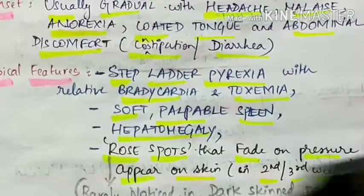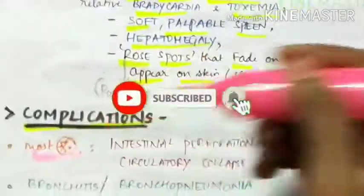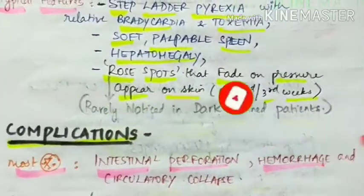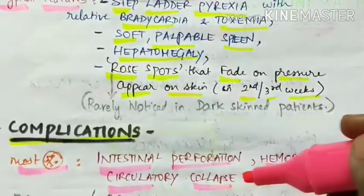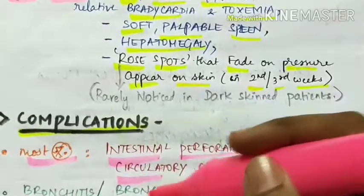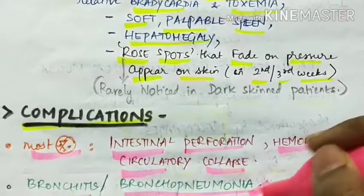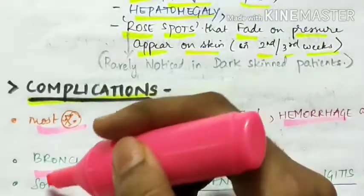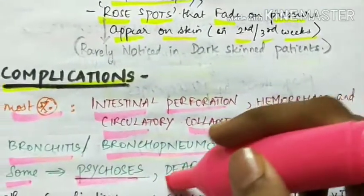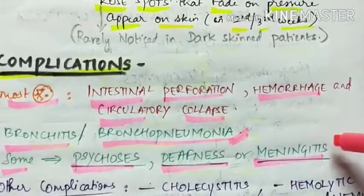The complications of enteric fever: the most important complications are intestinal perforation, hemorrhage, and circulatory collapse. Other complications include bronchitis and bronchopneumonia, which are seen commonly. Some other complications such as psychosis, deafness, or meningitis occur very rarely.